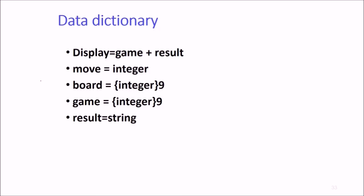The data dictionary: display will be game plus result. Move will be an integer. Board will be integer with 9. Game will be integer with 9. Result will be string.